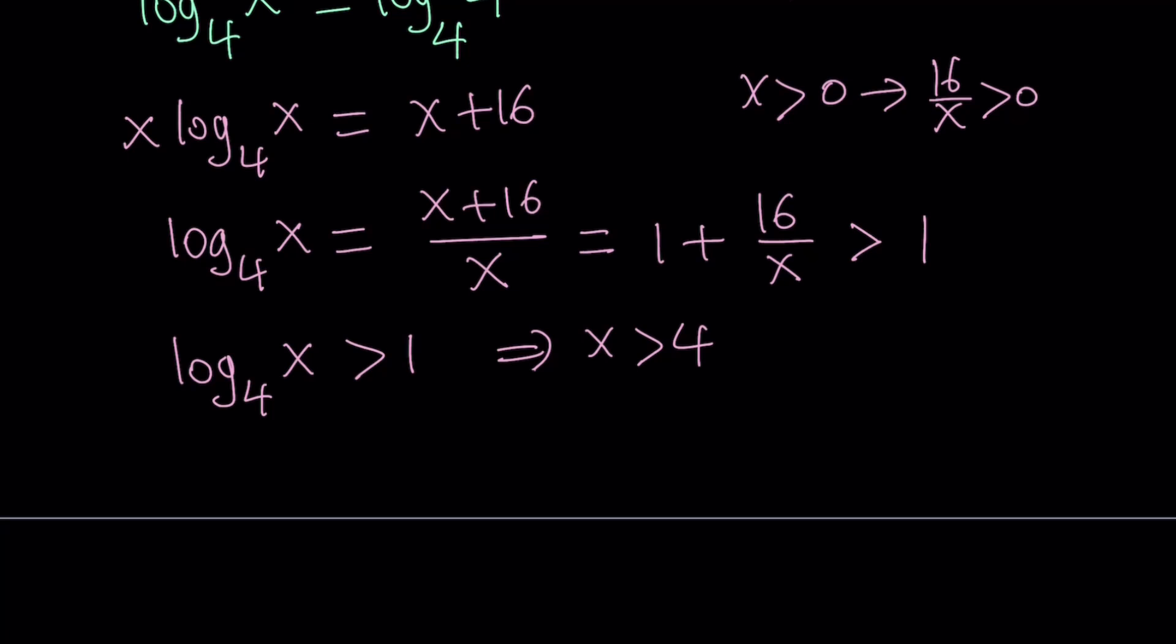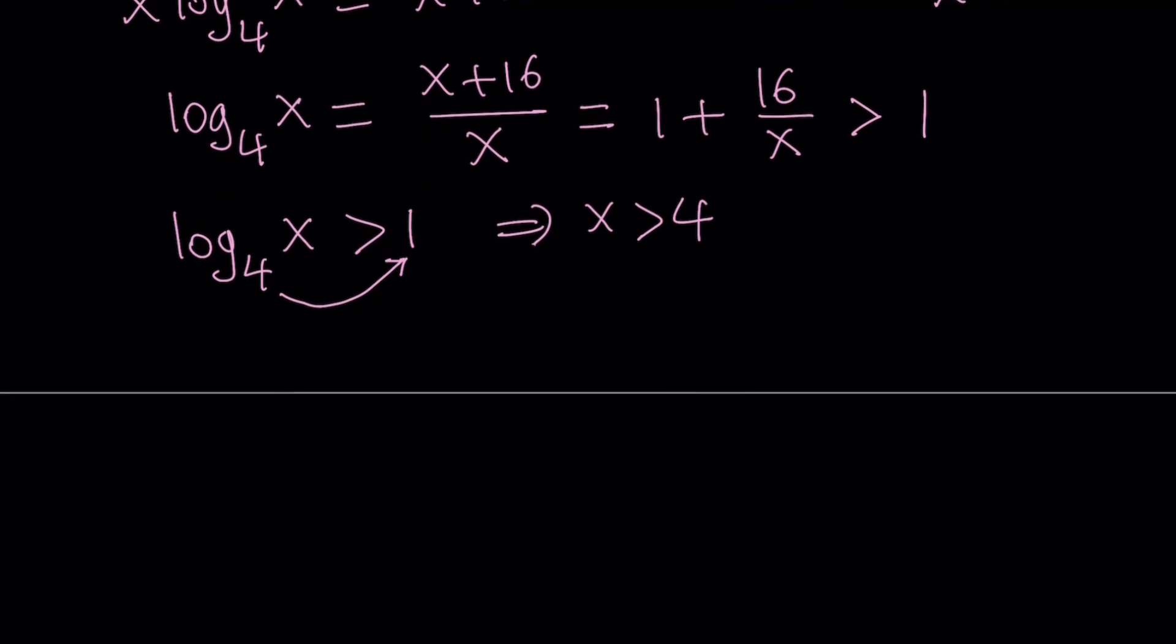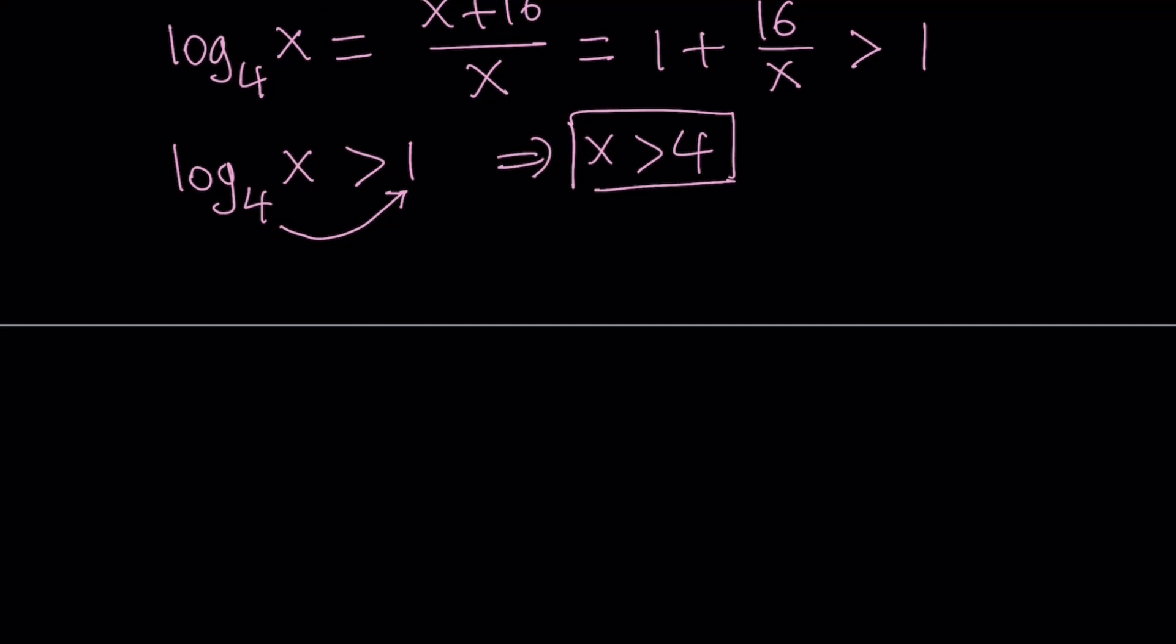So how did we get that? By using the definition of logs, this is the base, that's the exponent, and the rest is fairly easy. So we know that x must be greater than 4, but that still doesn't give us the whole thing. Let's rewrite our equation. Log x equals 1 plus 16 over x.